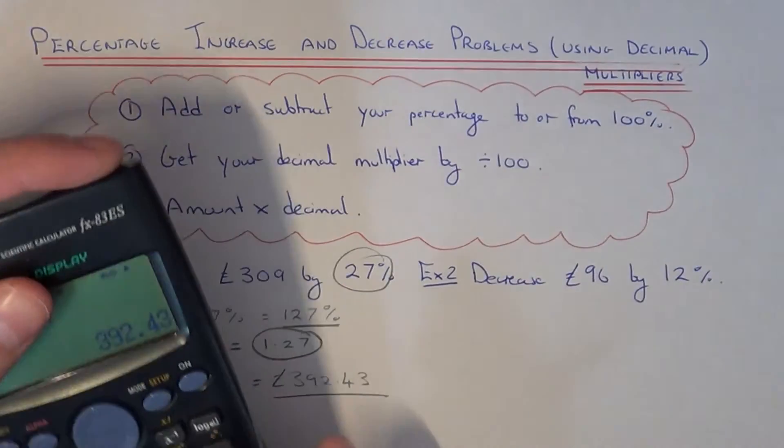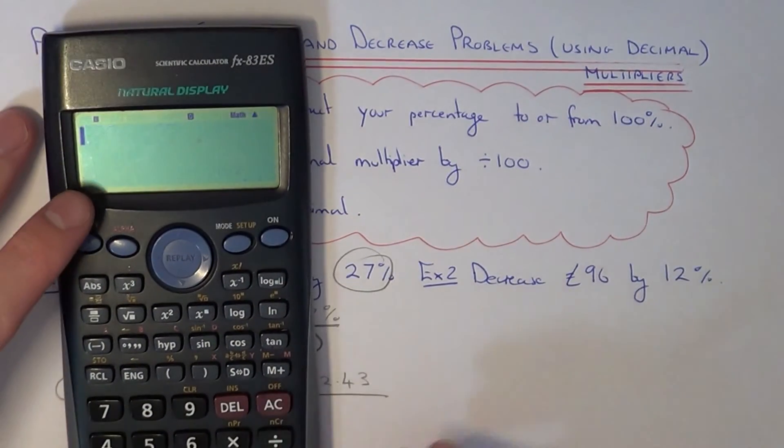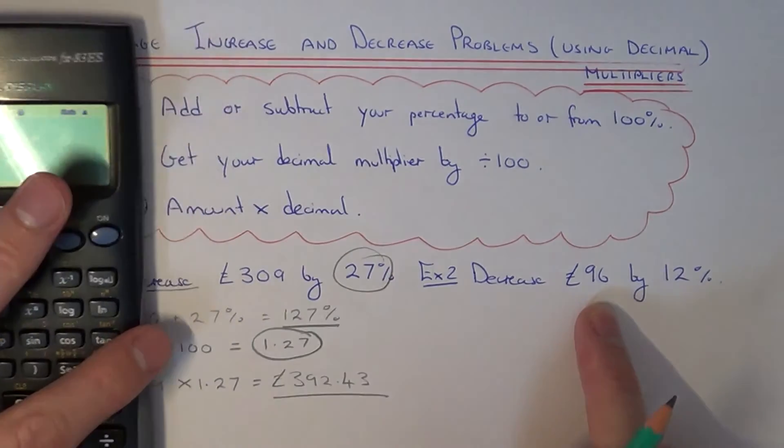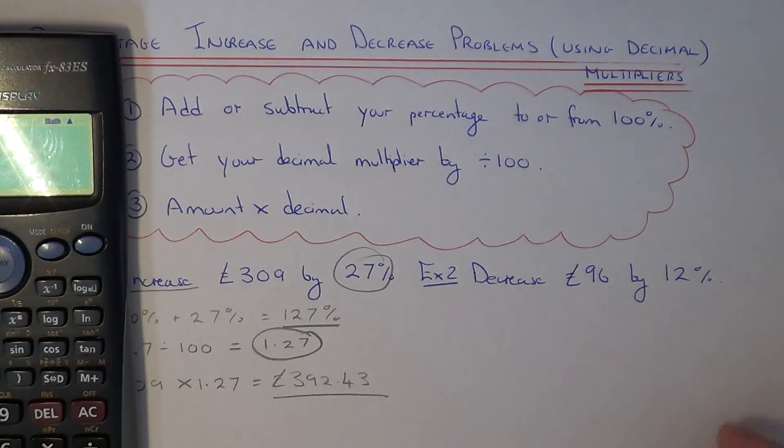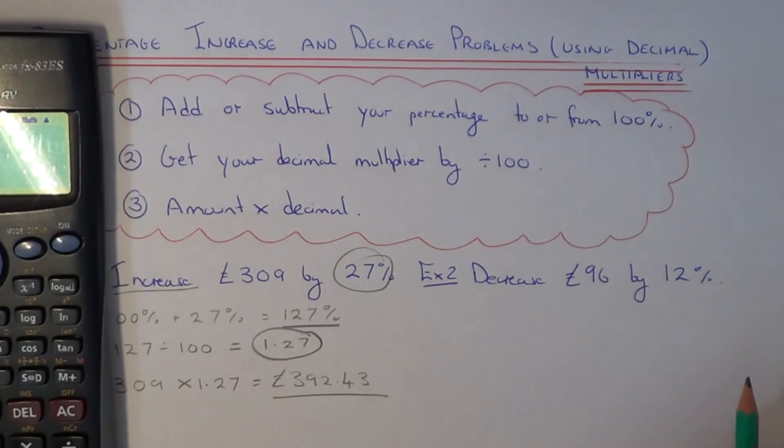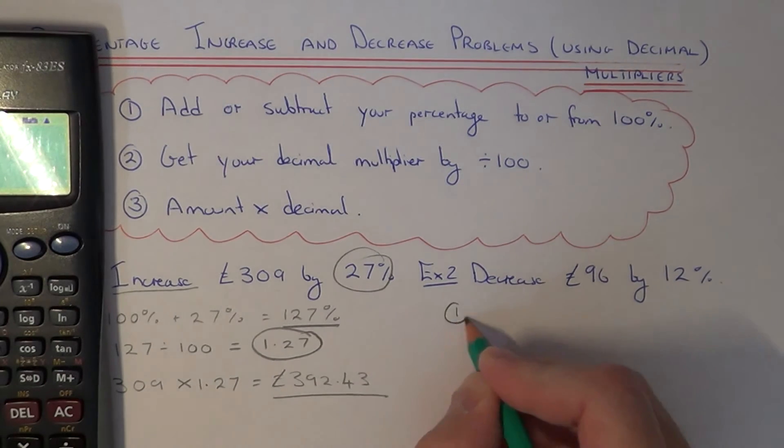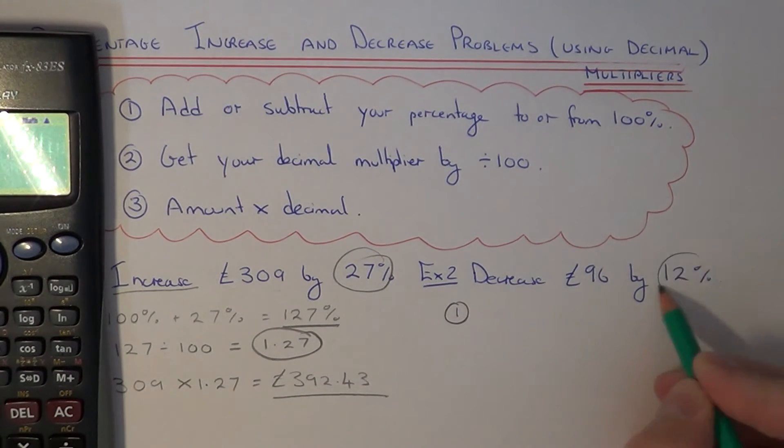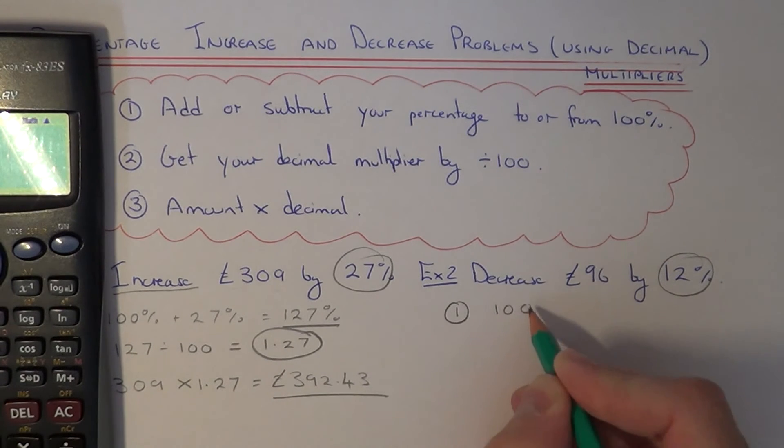Let's move on to example two. This time we need to do a decrease. We've got to decrease £96 by 12%. Since it's a decrease, we need to subtract our percentage away from 100. So we do 100 take away 12 which gives us 88%.